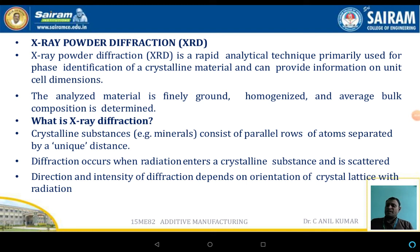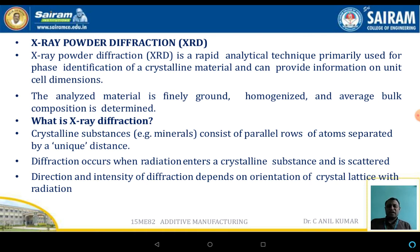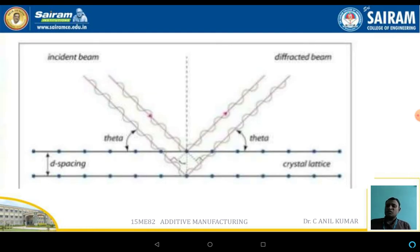X-ray powder diffraction (XRD) is a rapid analytical technique primarily used for the phase identification of crystalline materials and can provide information on unit cell dimensions. The analyzed material is finely ground and homogeneous, and the average bulk composition can be determined. A crystalline substance consists of parallel rows of atoms separated by a unique distance. Diffraction occurs when radiation enters a crystalline substance and is scattered; the direction and intensity depend upon the orientation of the crystal lattice with the radiation.